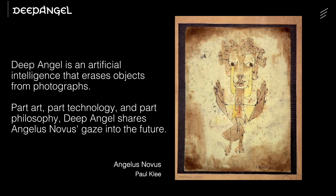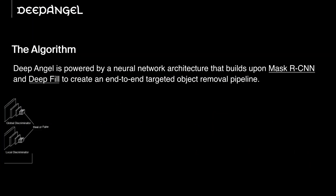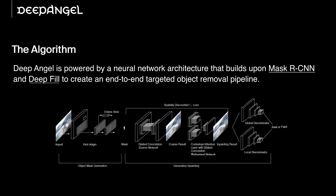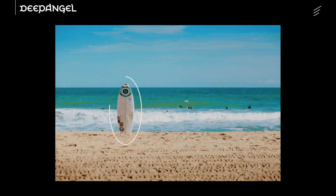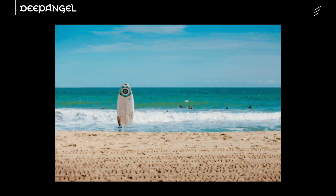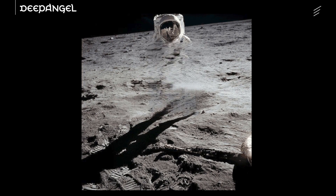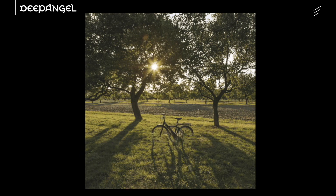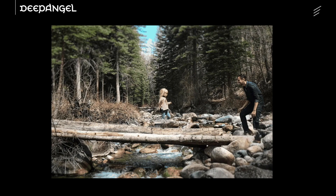What we did is we created Deep Angel. Deep Angel is an AI that combines two different kinds of computer vision techniques. One is object detection, using Mask R-CNN. The other is generative inpainting, using the DeepFill algorithm. When we combine the two, we can detect an object in an image — that could be a person, a dog, or a surfboard — then remove that object from the image, and replace the removed pixels with pixels that make sense with respect to the general context of the image.